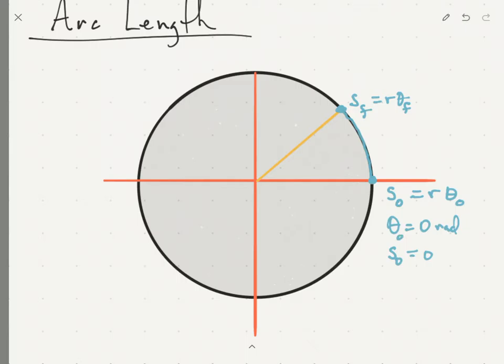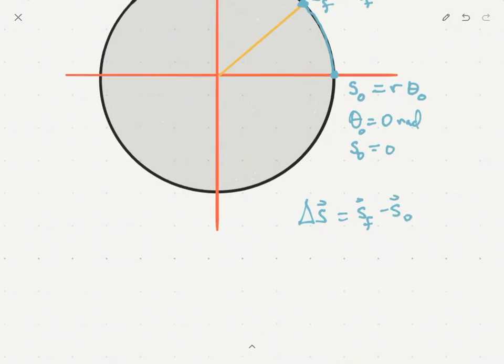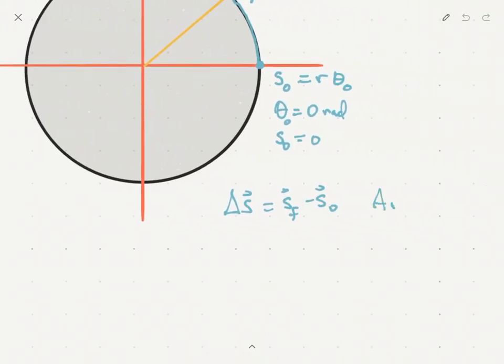And so you'll see that you can get some kind of arc length here. So now you'll see that the arc length, and I'd rather call it arc displacement, is just going to be S_F minus S_initial. So let's just refer to this as the arc displacement.